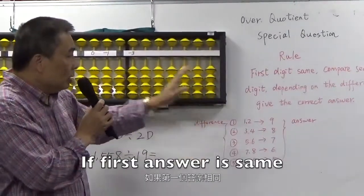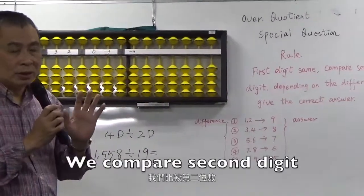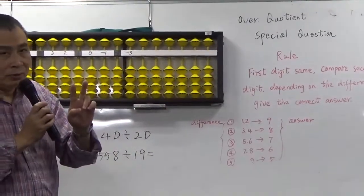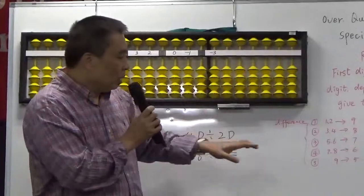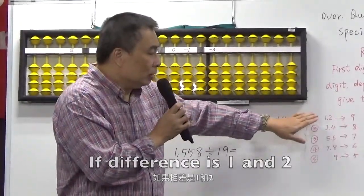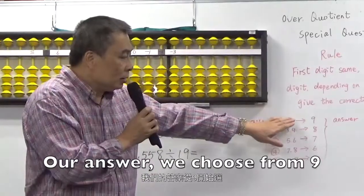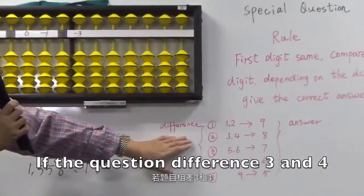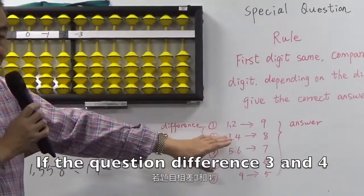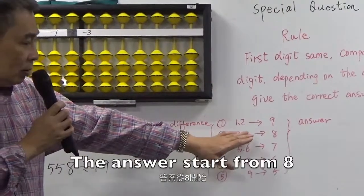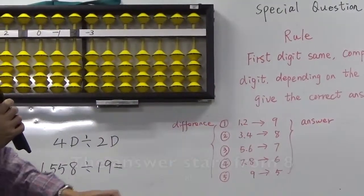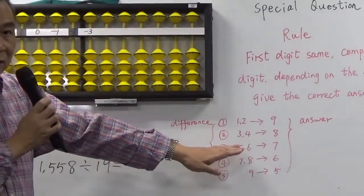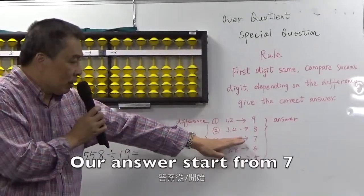If the first answer is same, we compare 2DG and look at how much different. If the difference is 1 or 2, we choose star 9. If the answer difference is 3 or 4, we answer star 8. If the second digit difference is 5 or more, our answer is star 6.